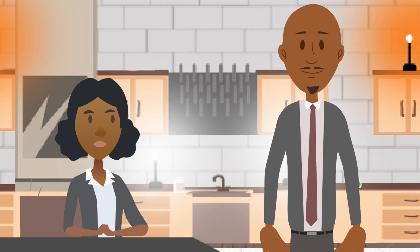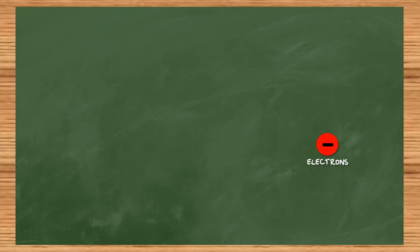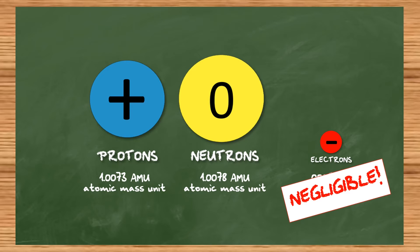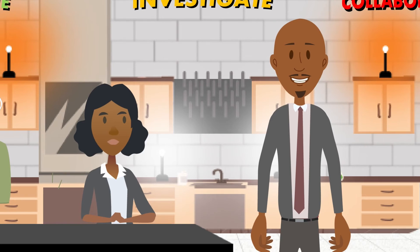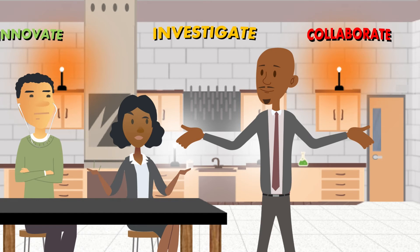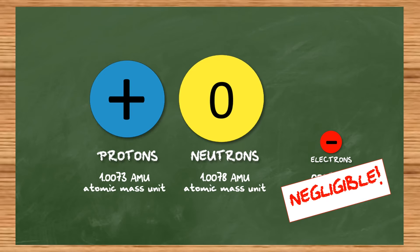Wouldn't they have to do that with electrons too? Well, electrons are negative and they push each other away too, but electrons are very, very small — they almost have no mass at all. We call their mass negligible; it's so tiny that it almost doesn't matter. A proton and a neutron each have a mass of about one atomic mass unit, or AMU for short.